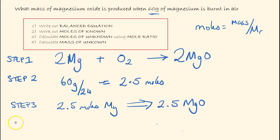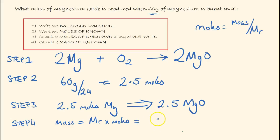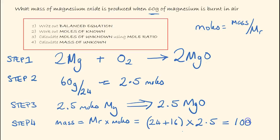The final step, step 4, is to work out the final mass. Mass equals Mr times moles. The mass of magnesium oxide is the Mr of magnesium oxide — which is 24 plus 16, remembering we don't use the number in front — multiplied by the number of moles, which is 2.5. This gives us the same answer of 100 grams of magnesium oxide.